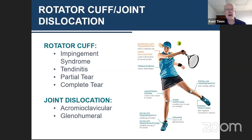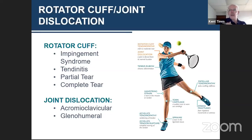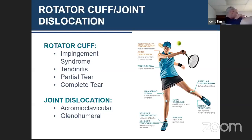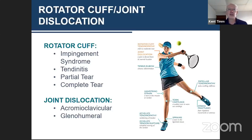With the rotator cuff, there are many possibilities, one of which is known as an impingement syndrome. An impingement syndrome occurs when one or more of the tendons of the rotator cuff gets pinched or impinged between the acromion — the point of the shoulder — and the head of the humerus, the ball of the ball-and-socket joint. The usual tendon involved is the supraspinatus tendon, which comes from the muscle on the back of your shoulder and attaches on the back of the humerus.